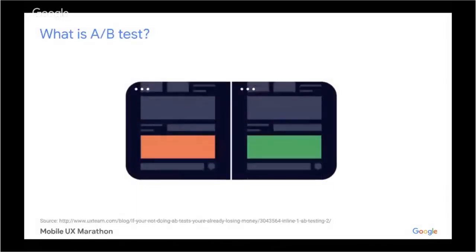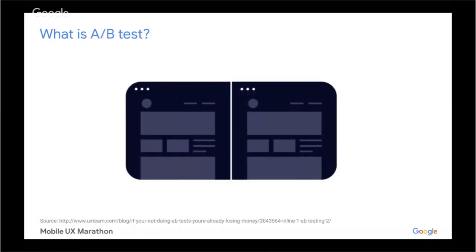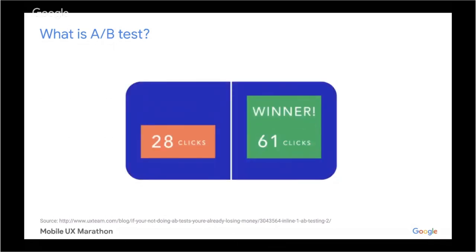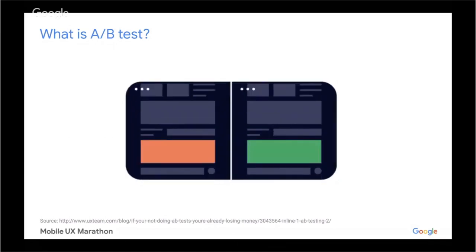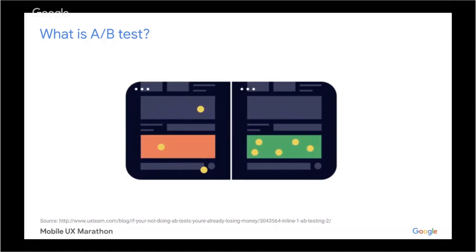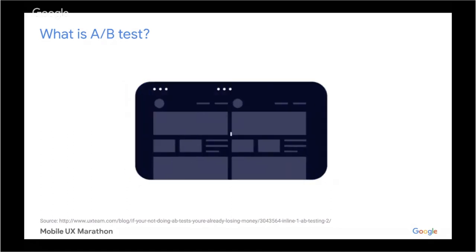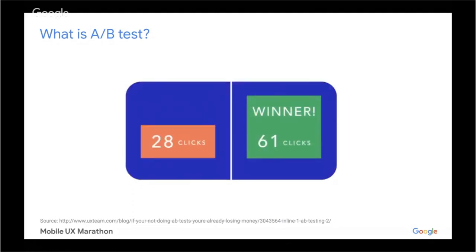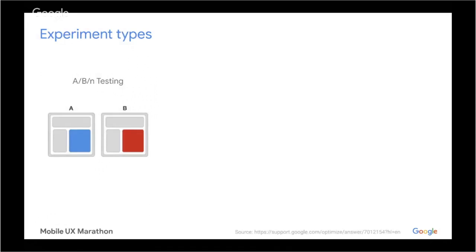A/B testing is basically comparing the performance of our website, or really small sections, under exactly the same circumstances. This GIF here represents it in a great way — we are just changing a small section of our web page and comparing the performance of that specific page. This is the most common A/B testing method, where we are changing only one section, as you can see with the blue and red images.